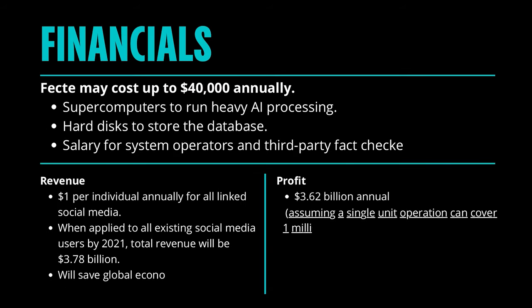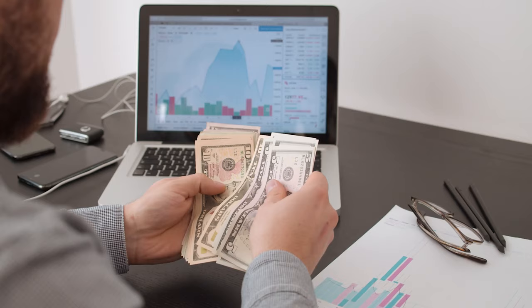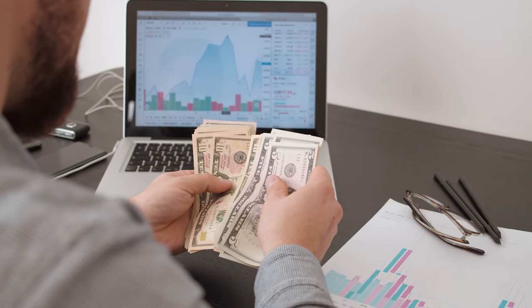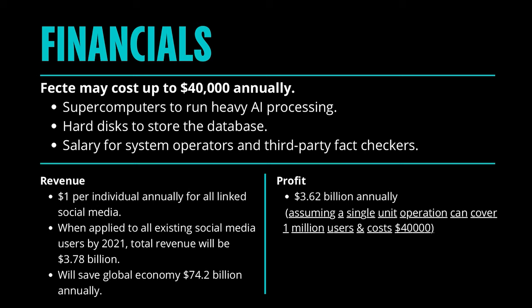For our financials, Factor requires high-spec CPUs, a lot of hard drives for storage, and payment for system operators and fact checkers. There are 3.78 billion social media users and we are setting the price at $1 per individual, giving us a revenue of $3.78 billion. Assuming one unit costs around $40,000 and covers 1 million users, we will reach a profit of $3.62 billion by 2022.